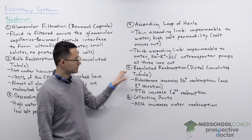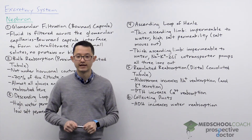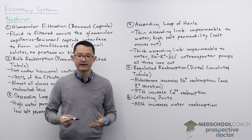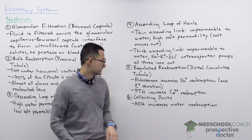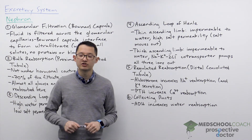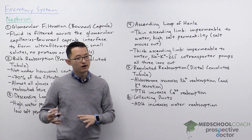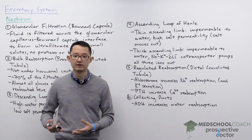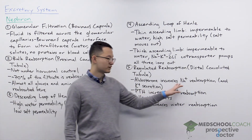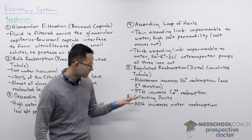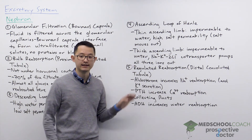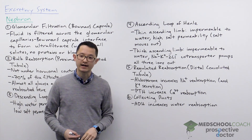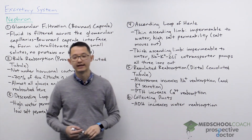Next we have the distal convoluted tubule where regulated reabsorption occurs. It's called regulated reabsorption because this is where hormones that affect the composition of urine act. Aldosterone increases sodium reabsorption by increasing the activity of the sodium-potassium pump, which simultaneously increases potassium secretion in the urine. Parathyroid hormone (PTH) also acts here to increase calcium reabsorption in the kidneys.